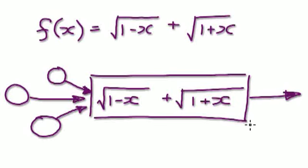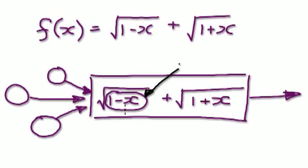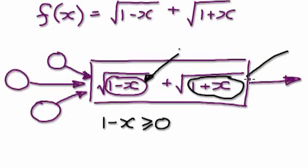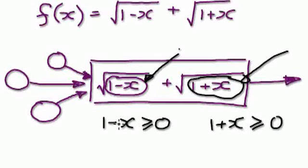So the domain for this function — if you look at it, this cannot be a negative number. It can be 0, but it cannot be a negative number. So just concentrate on this bit here. You need 1 minus x to be equal to or greater than 0. And also for this other part, you will need 1 plus x to be equal to or greater than 0.